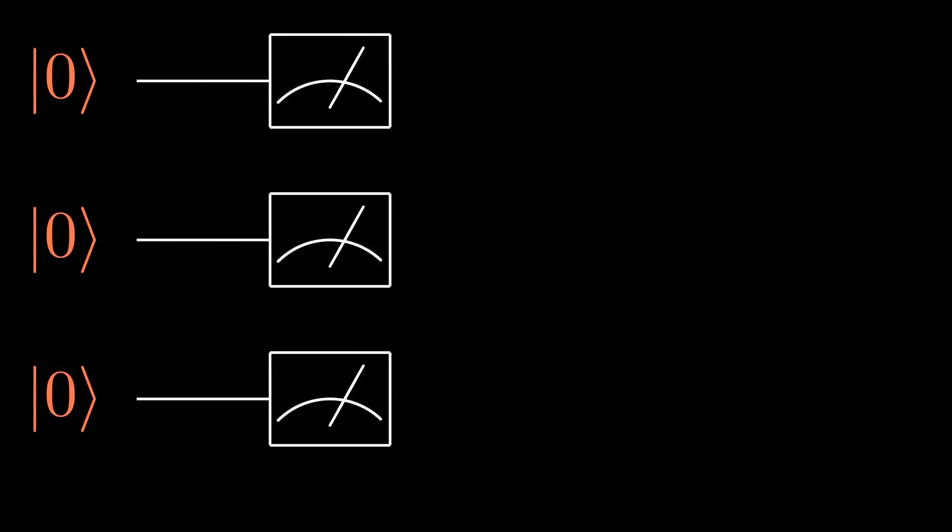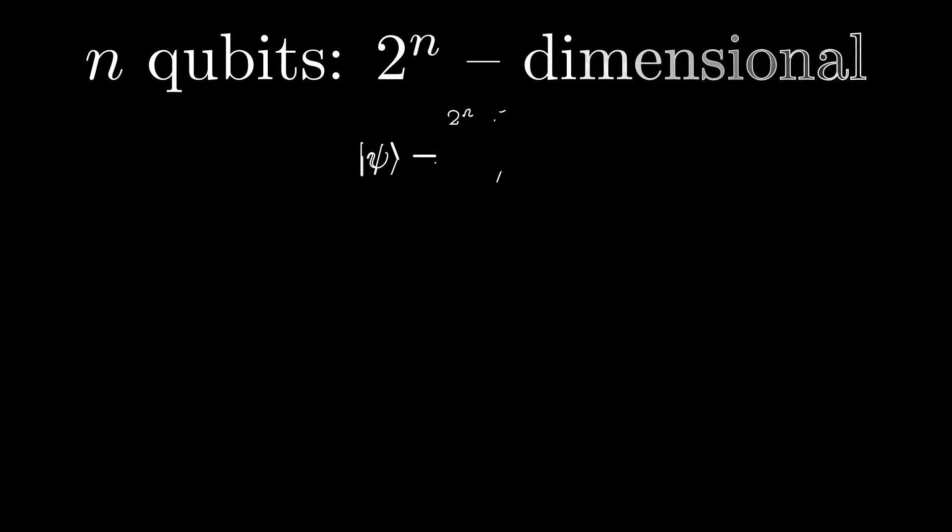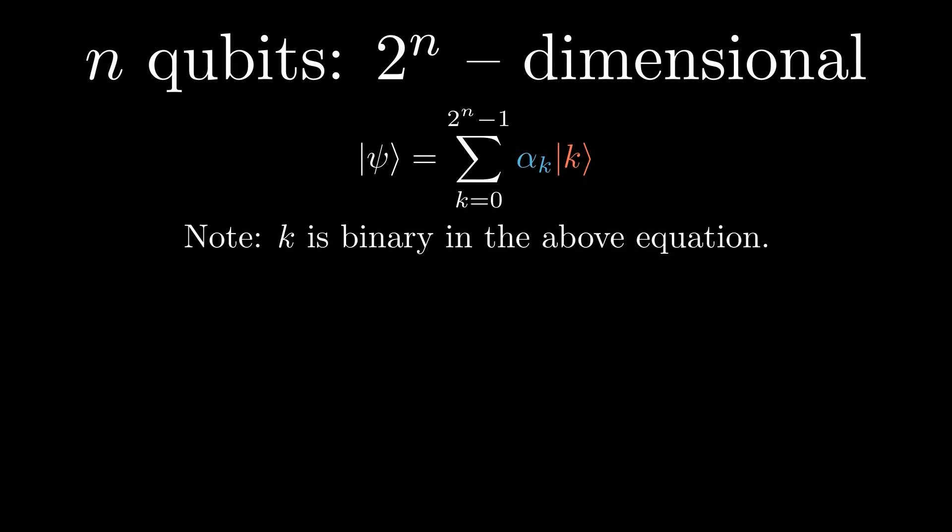Of course, this entire model can be extended to three qubits, with 2 to the power of 3, or 8 possible kets. To generalize this idea, an n-qubit quantum computer's quantum state has dimensions of 2 to the power n. And generalizing the normalization constraint, the square of their coefficients must always sum up to 1.